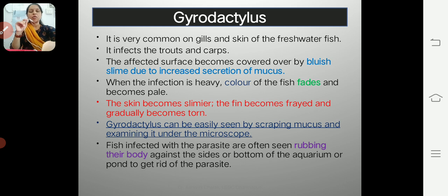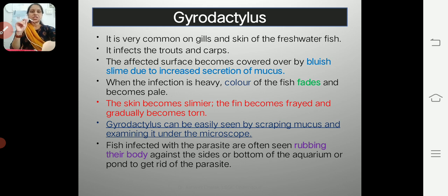Gyrodactylus is very common on the external surface and body parts of fish, including their gills and skin. It is found in freshwater fishes. After infection, the parasite causes excessive secretion of slime or mucus, and the fish body becomes covered by a bluish-colored slime — this is the first symptom of Gyrodactylus infection.